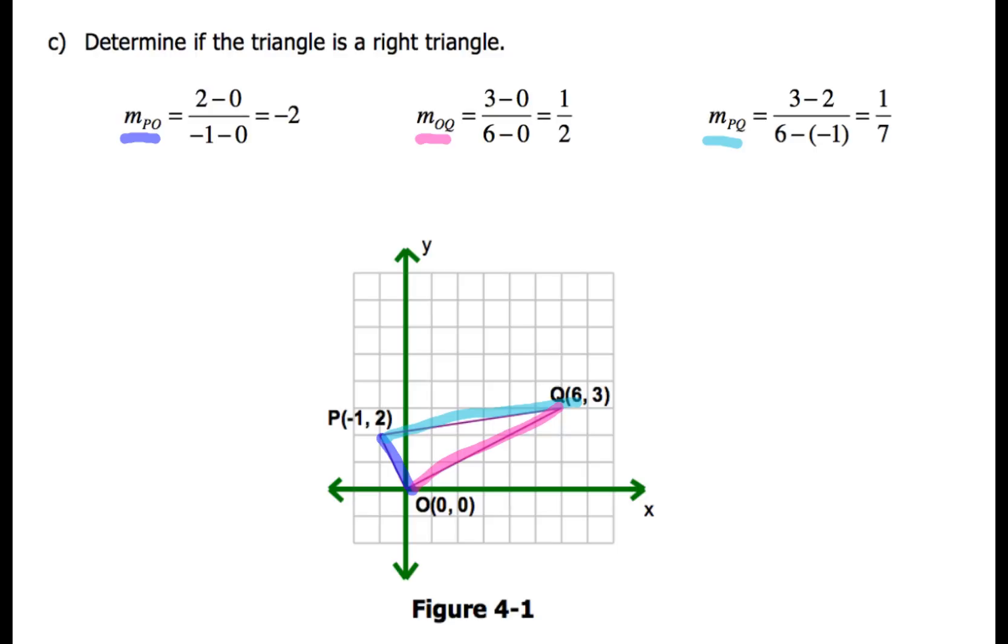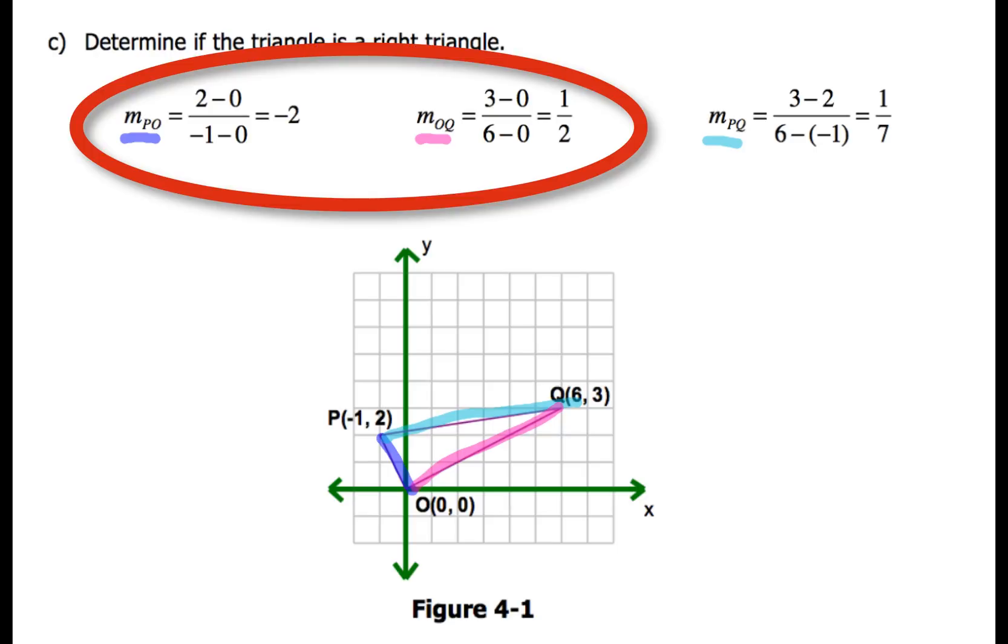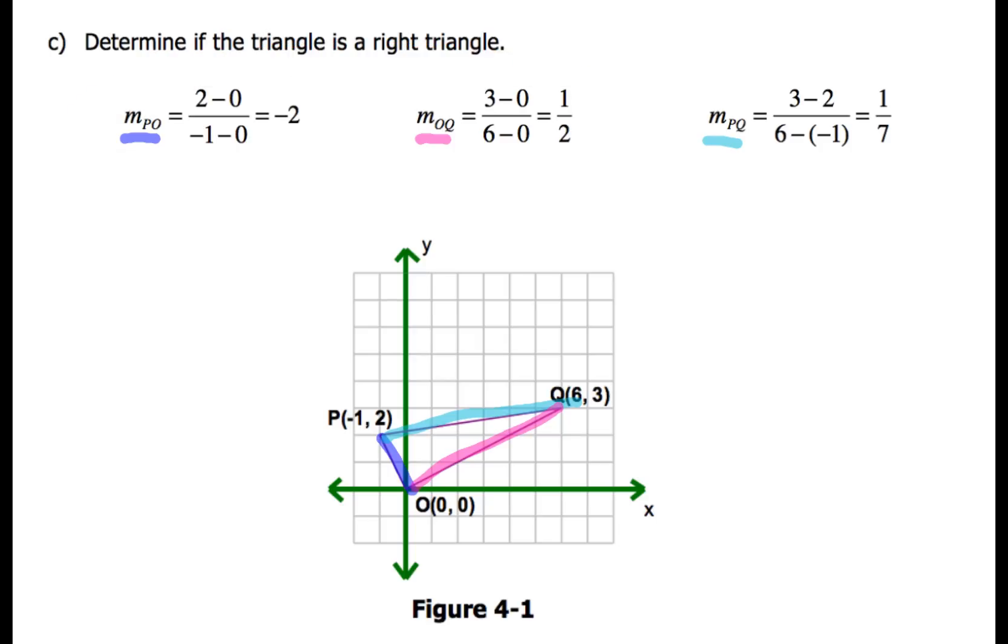Now for each one of these, what I want you to do first is take a look at the slopes of PO and OQ, those two segments. Check them out. If you notice the product of those two slopes is negative one, give yourself a pat on the back because that's right. They are going to have a product of negative one. Or you could also describe those two slopes as being negative reciprocals.